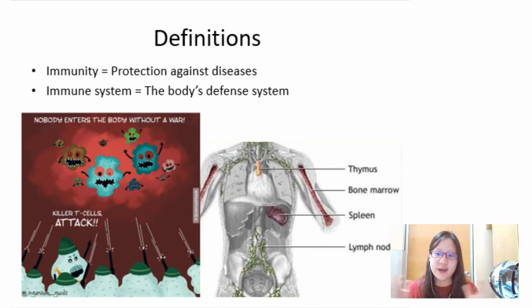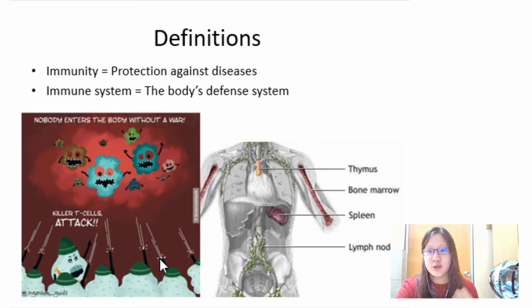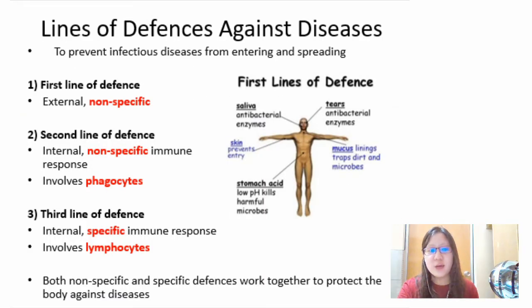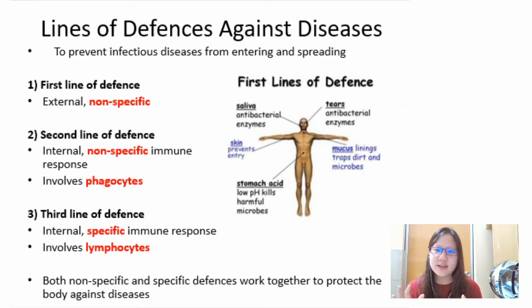There are mechanisms and cells all working together to defend the body against diseases. As we go through this chapter, imagine it like a war — our body is continuously fighting against different pathogens every single day. Your cells and systems are like soldiers protecting your body, and like any war, there are different lines of defense.